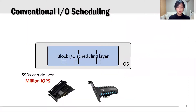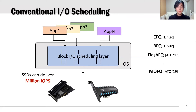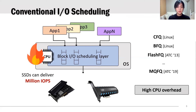Modern high-performance SSDs can deliver a million I/O operations per second. This huge increase in bandwidth and capacity of SSDs enabled servicing I/O requests from multiple tenants on a single storage device. Naturally, fair sharing of the SSD bandwidth is important to meet the service level agreements of applications. Many fair-share I/O schedulers are implemented at the block layer of the operating system. However, a problem of I/O scheduling in the block layer is that it induces high CPU overhead. Since modern high-performance SSDs are shifting the bottleneck from I/O to CPU, reducing the CPU overhead associated with block I/O scheduling is important.